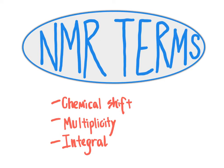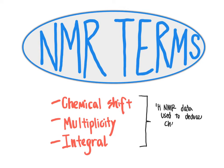In the next few videos, we're going to go into more depth about how chemical shifts, multiplicities, and integrals arise in NMR spectra. For now, I just want to make you aware of these three terms as they apply to an NMR spectrum. Ultimately, in proton NMR spectra specifically, we'll be using these critical pieces of information to solve the chemical structure of a molecule. These are key pieces of proton NMR data used to help us deduce the chemical structures of organic molecules.